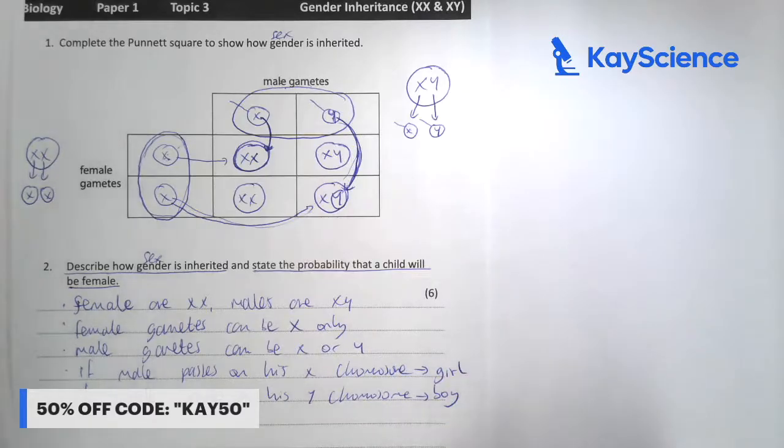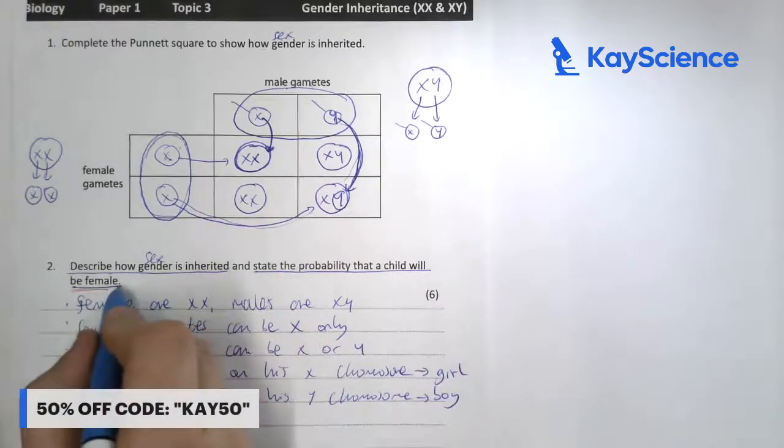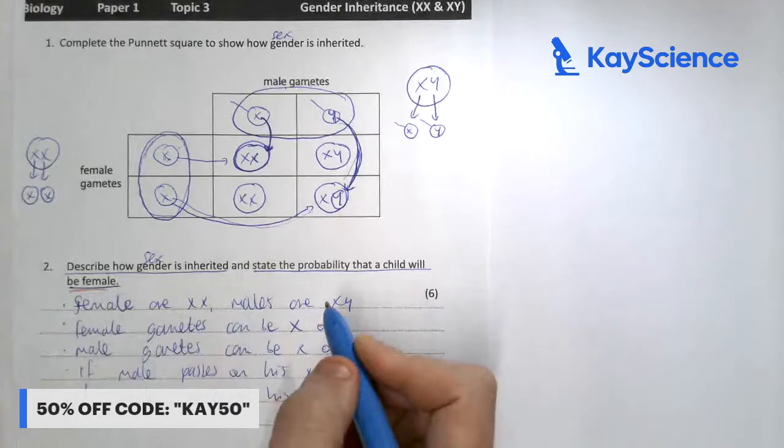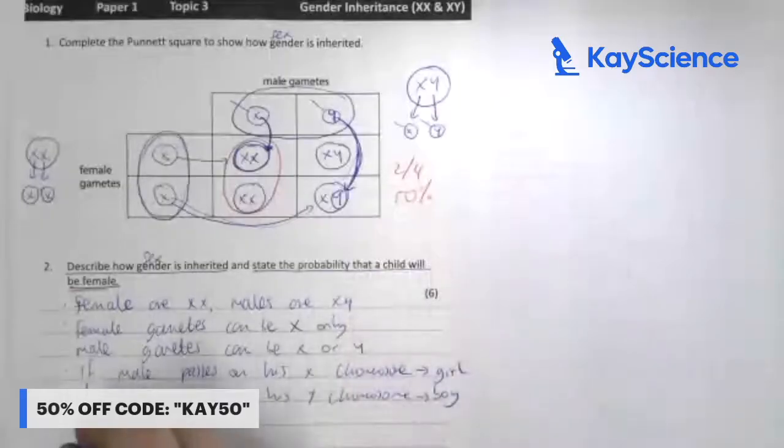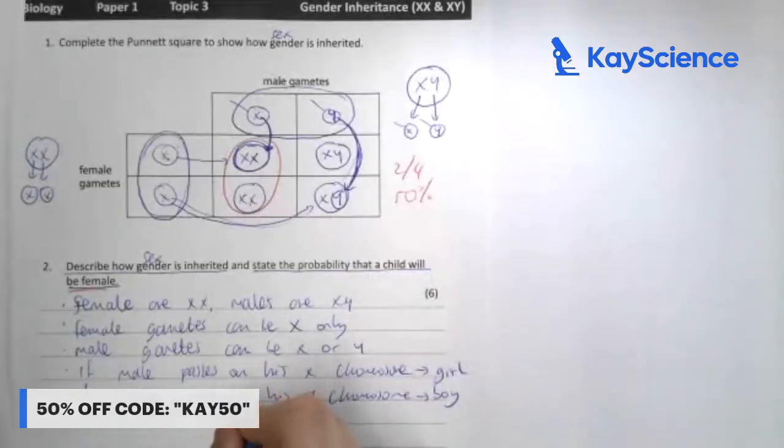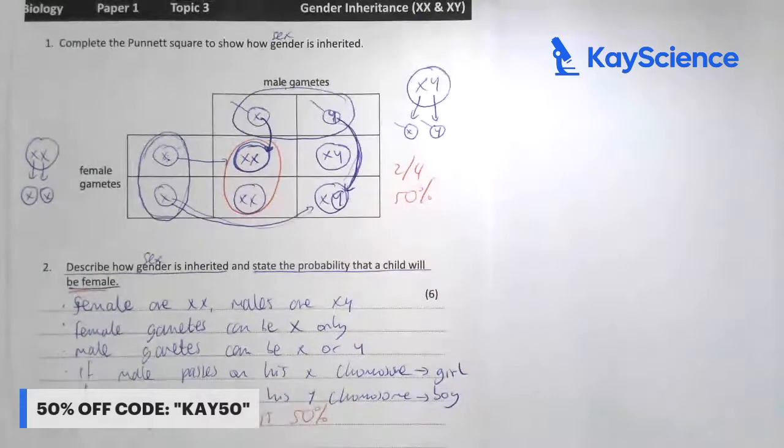So what is the percentage chance of having a female? XX is going to be a female, so it's going to be two out of four, 50%. So the chance of a female is 50%.